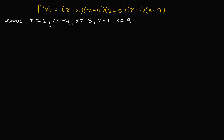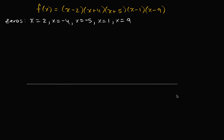As we've talked about in multiple videos, if these x values, when you input them into the function, give you f of two equals zero, f of negative four equals zero, then that means they're also going to define our x-intercepts. Let me draw a big axis here.